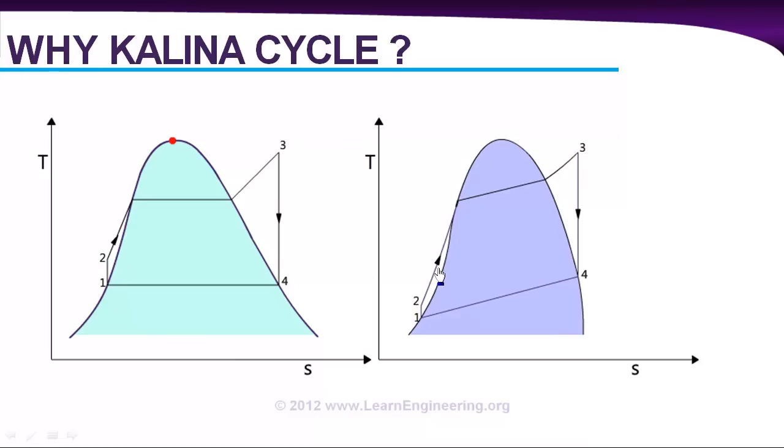And this small deviation in the thermal cycle makes all the difference in Kalina cycle. This will explain why Kalina cycle has got much higher thermal efficiency compared to a Rankine cycle. Simply because of this reason. You know efficiency of a Carnot engine can increase due to two reasons.